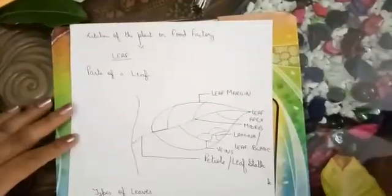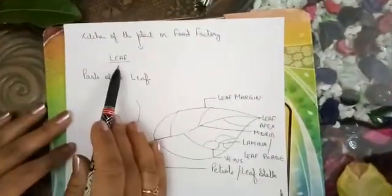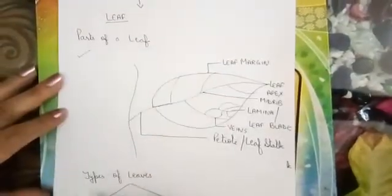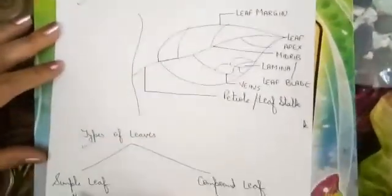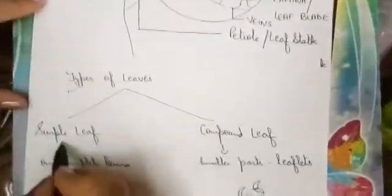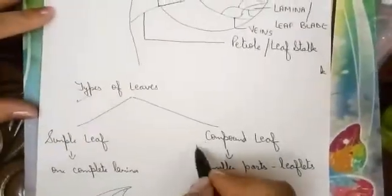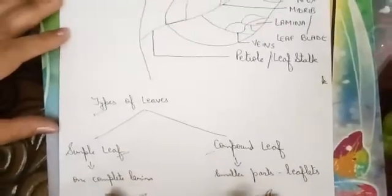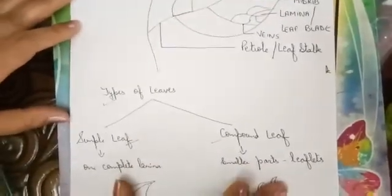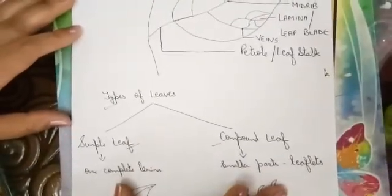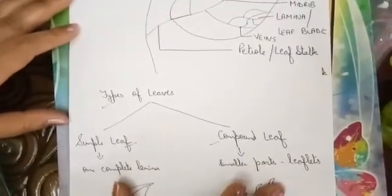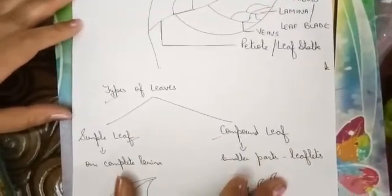So students, today we have discussed about the leaf — the parts of the leaf and the types of the leaf, that is simple leaf as well as compound leaf. You can collect different leaves from your garden and observe their structure. Thank you.